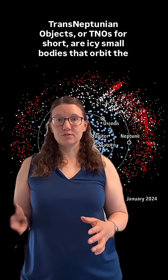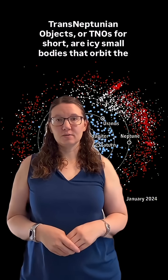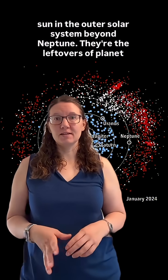Trans-Neptunian objects, or TNOs for short, are icy small bodies that orbit the Sun in the outer solar system beyond Neptune.